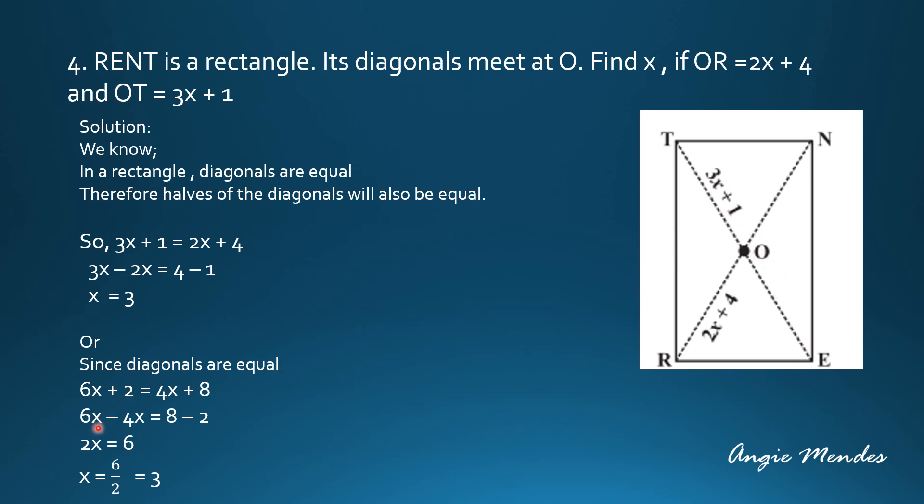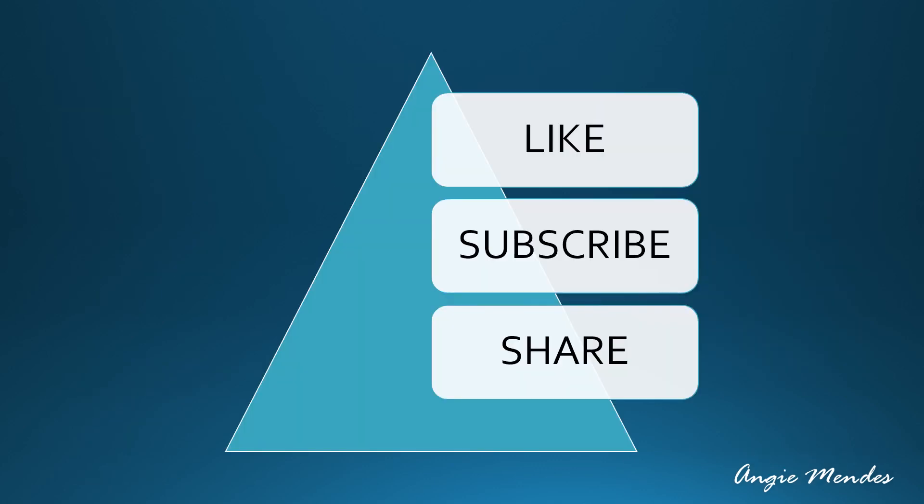So taking the X variables on one side and the numbers on the other, we will get 2X is equal to 6. On further simplification, we get X is equal to 3. Do solve these examples on your notebook and remember to practice every day because practice will make you better. I'll see you soon with the next video. Thank you.